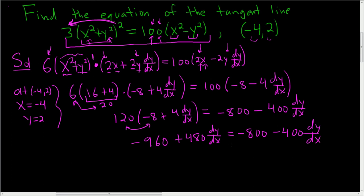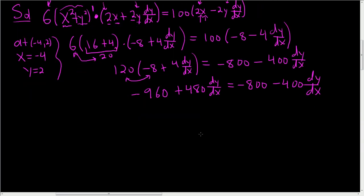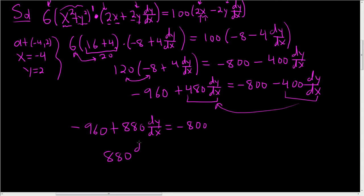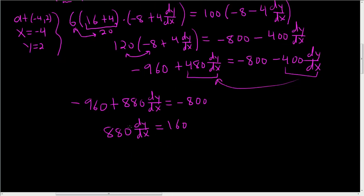So easy to mess up in problems like this. Let's keep going. So I guess we need all the dy dx's on one side by themselves. So I'm going to add this to this. So we have negative 960 plus 880 dy dx equals negative 800. Add the 960. So we get 880 dy dx equals 160. At this point, we'll divide by 880. Okay, so when we divide by 880, I'll do it over here.